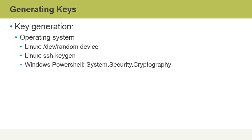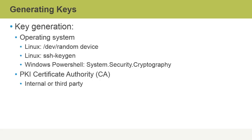On the Windows side, in PowerShell, we could use the System.Security.Cryptography provider to generate keys. A PKI certificate authority could also be used to generate keys. We could have an internal certificate authority, or we could have keys generated from a trusted third-party certificate authority.